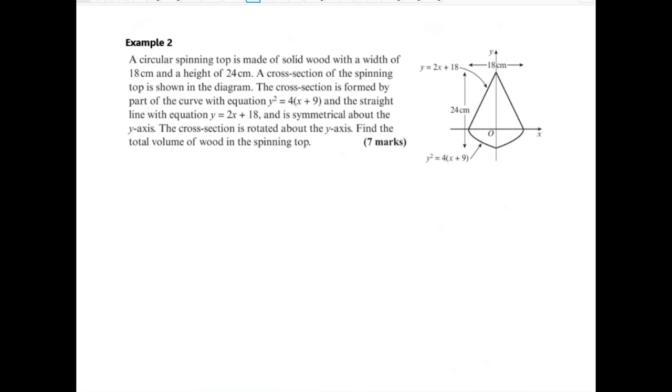What's the example then? So this one is a circular spinning top made out of wood. Width of 18 centimeters which is marked in the diagram and the cross section is shown here. This is formed with two equations. So we've got a straight line on the top. So y equals -2x plus 18 is this one over here. And we've got y squared equals 4x plus 9 on the bottom. The cross section rotated around the y-axis. Find the total volume of wood in the spinning top. So we're going to do two volumes here and add them together. We're going to do the top one and the bottom one. Actually we only need like half of the curve. You only need like this bit and this bit.